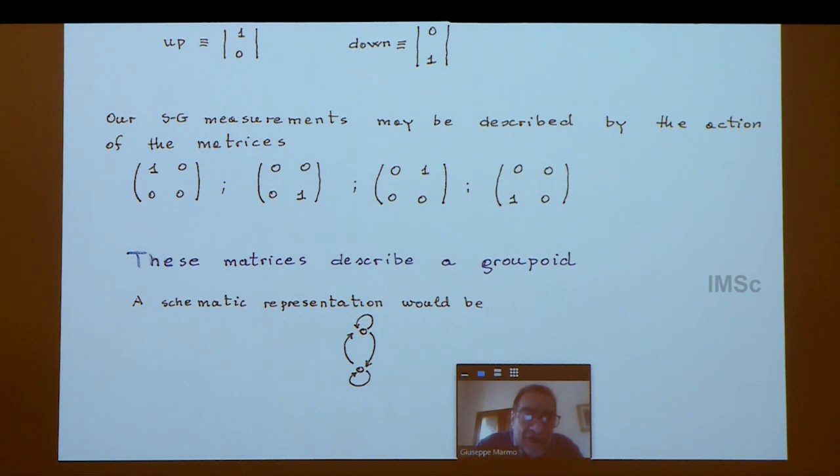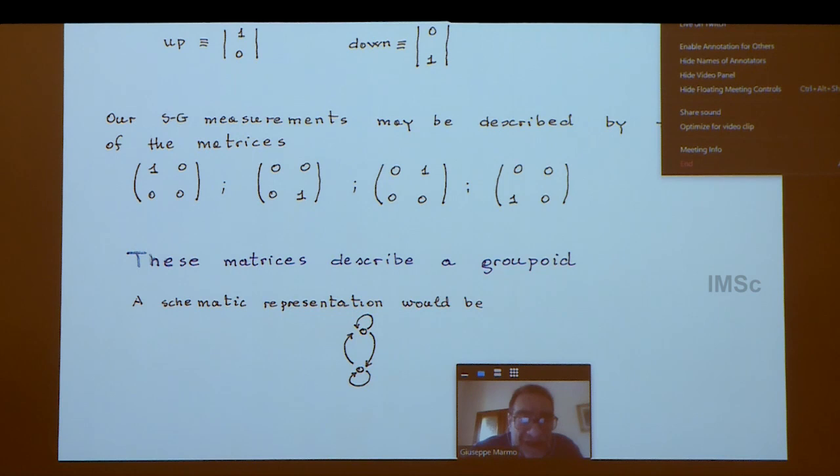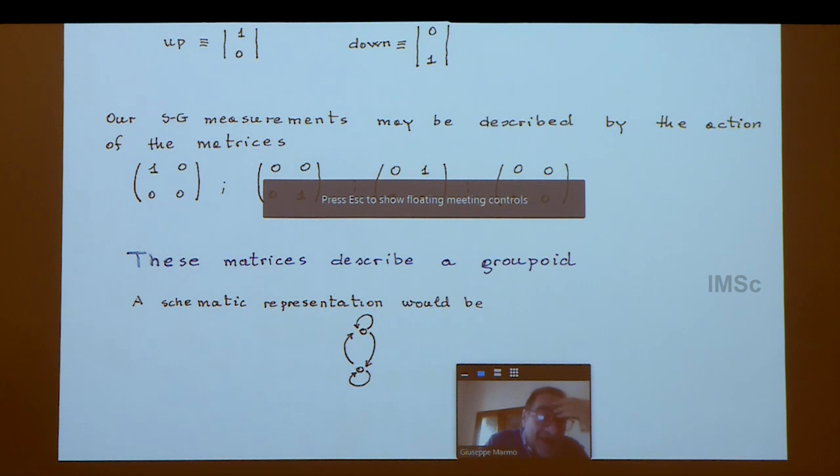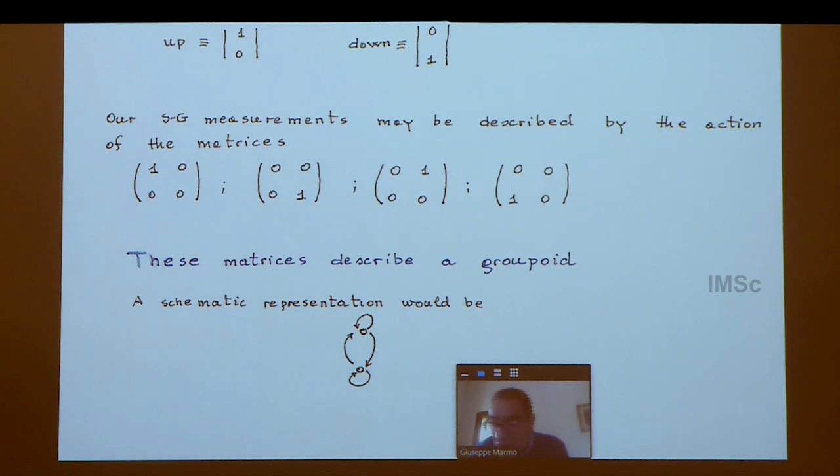If we represent up and down atoms by unitary vectors, the four Stern-Gerlach measurements may be described by the action of these four matrices. The first two are selectors, while the last two matrices are the flippers.